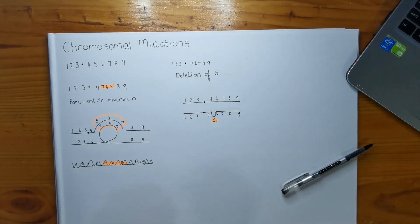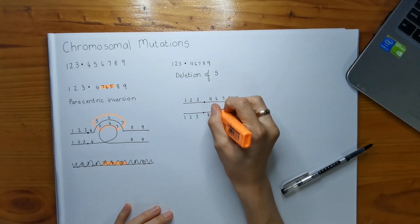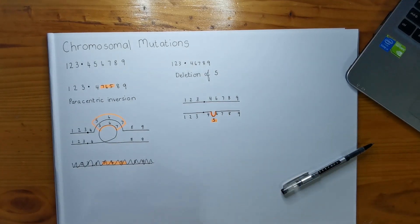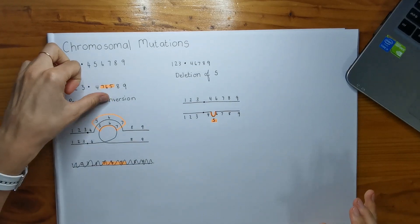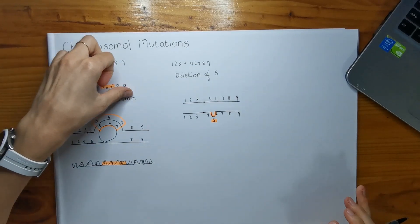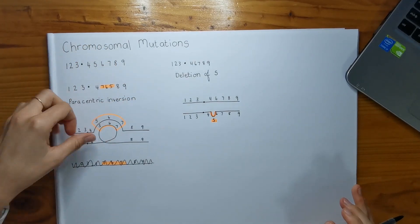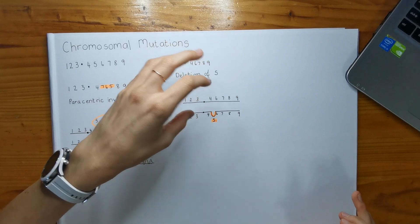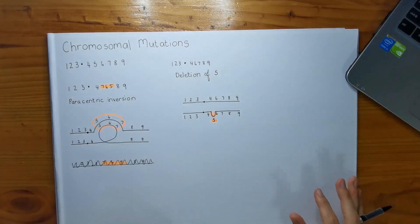I'm just going to highlight that to show you the bubble occurs there. That's quite an easy one. The inversion chromosome arrangement is way more difficult than the deletion or duplication bubbles.